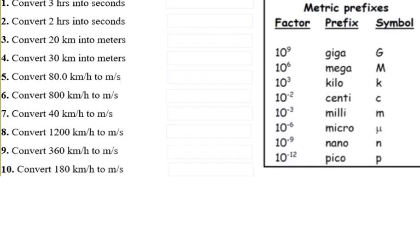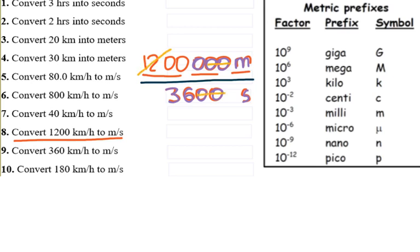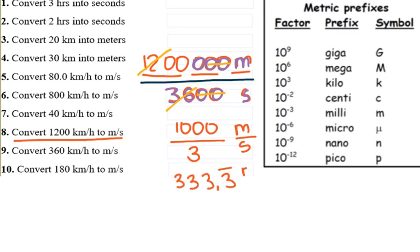I'm going to convert 1,200 kilometers per hour into meters per second. Kilo stands for 1,000, so I have 1,200 times 1,000 meters. In one hour there are 3,600 seconds. I can cancel 100 and 100, and cancel 12 and 12. What's left on top is 1,000 and the bottom is 3, giving me 333.3 meters per second.